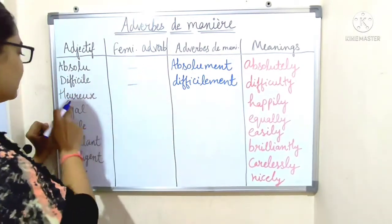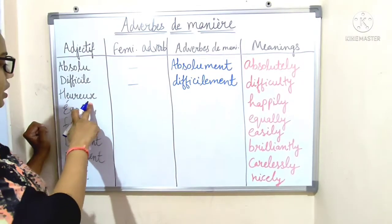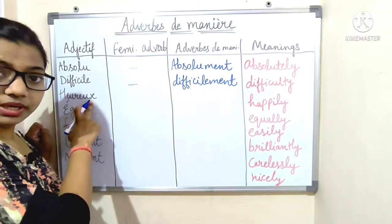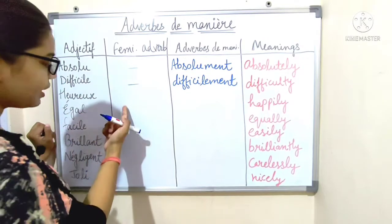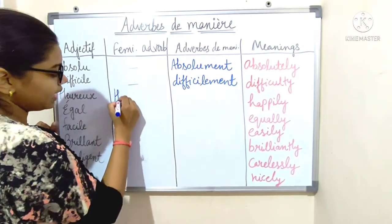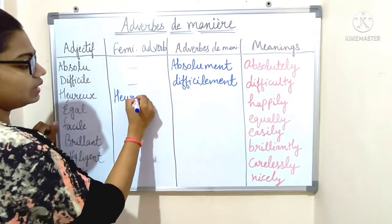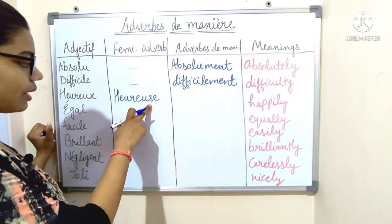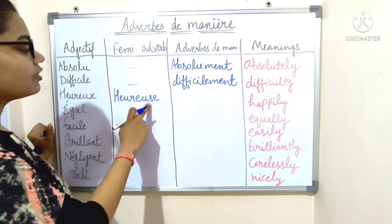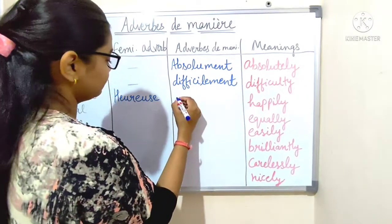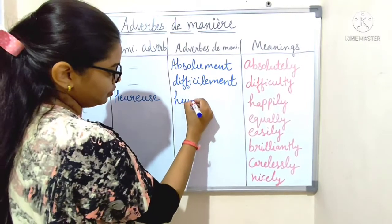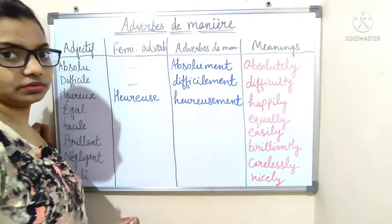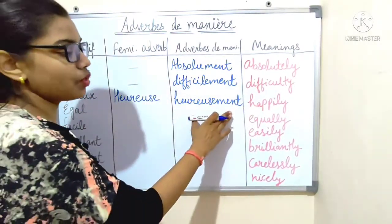Next: 'heureux', which means 'happily'. It ends with the consonant X, so we make it feminine first: H-E-U-R-E-U-S-E. Then we add '-ment': H-E-U-R-E-U-S-E-M-E-N-T — 'heureusement', which means 'happily'.